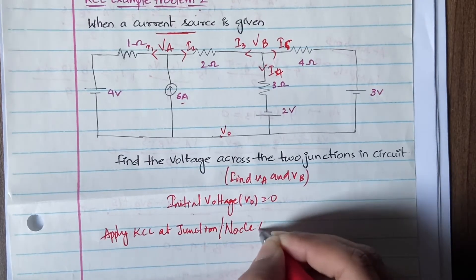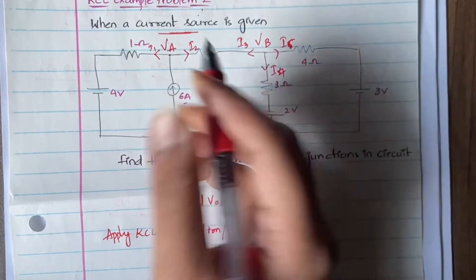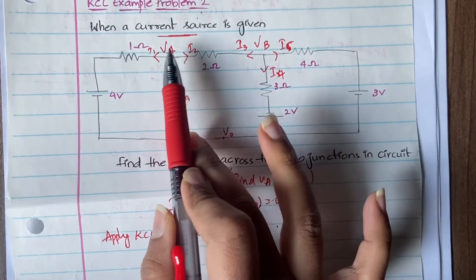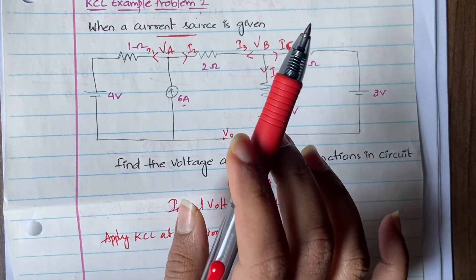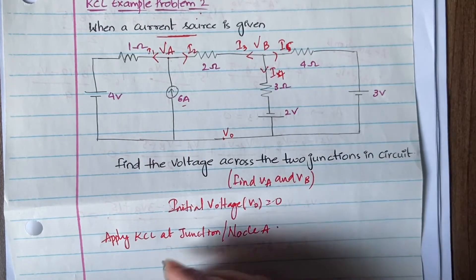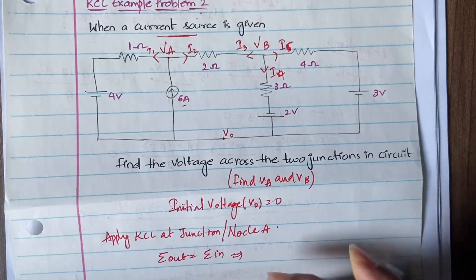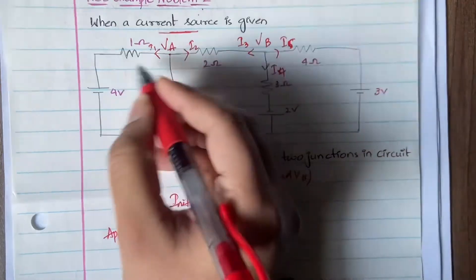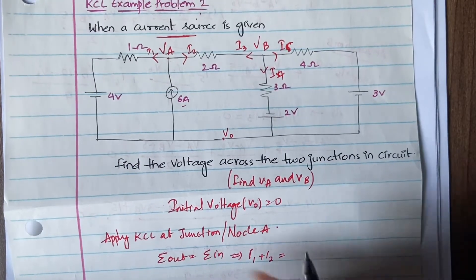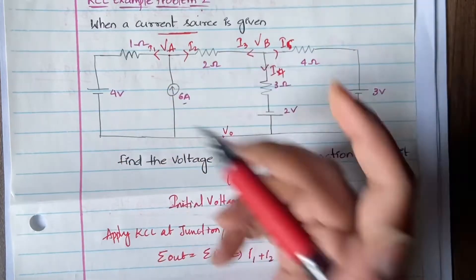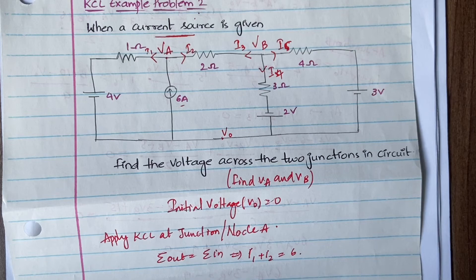Applying KCL at node A: the currents associated with junction A are i1, 6 amperes, and i2. KCL states that current outside equals current inside. The currents going outside are i1 and i2, so i1 plus i2 equals the current coming inside, which is 6 amperes.